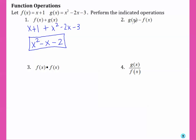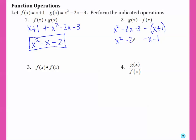Number two asks us to take g of x and subtract f of x. We have to subtract all of f of x, so make sure you distribute this negative to both of the terms in f of x. Now that we've distributed that negative and got rid of the parentheses, we can combine like terms again, giving us x squared minus 3x minus 4.